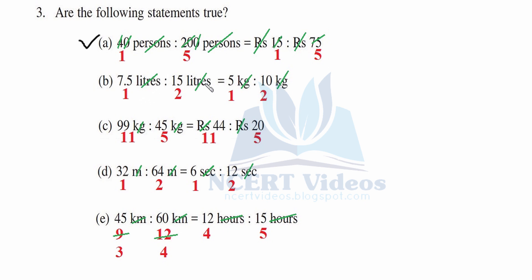Part b: Liters cancel with liters and kg with kg. 7.5 times 2 is 15, so the ratio is 1 is to 2. Similarly 5 to 10 gives 1 is to 2 — therefore in proportion. Part c: kg and rupees cancel. 11 nines are 99 and 5 nines are 45. Also 11 fours are 44 and 5 fours are 20 — ratios are equal, therefore the statement is True.